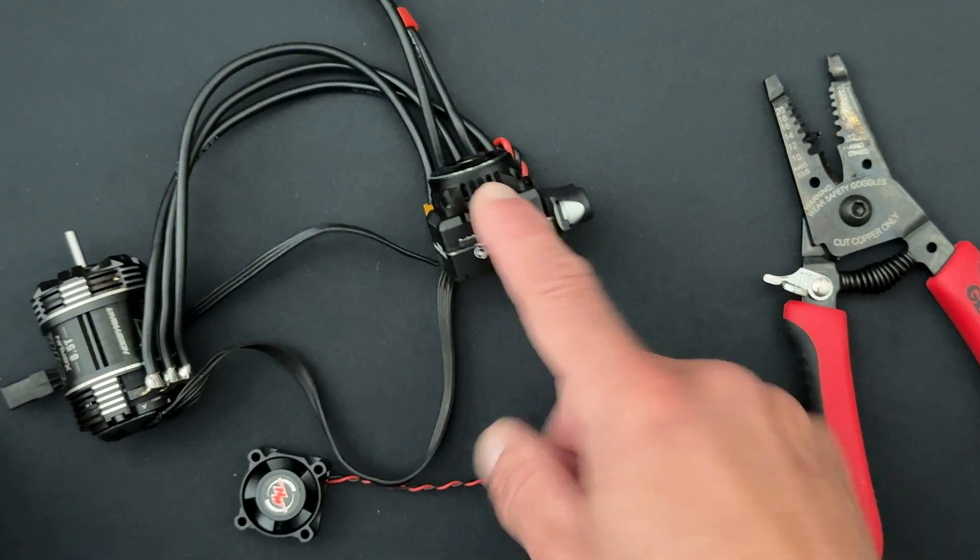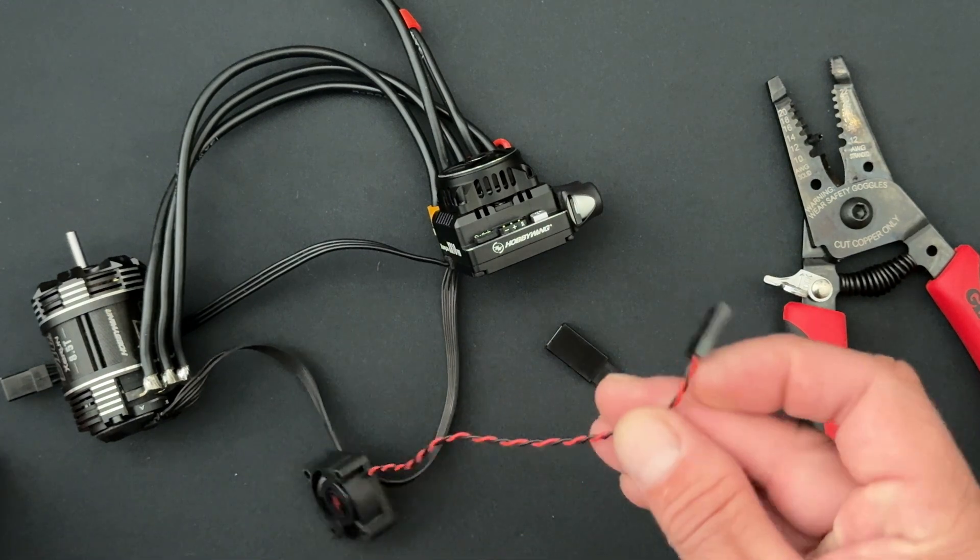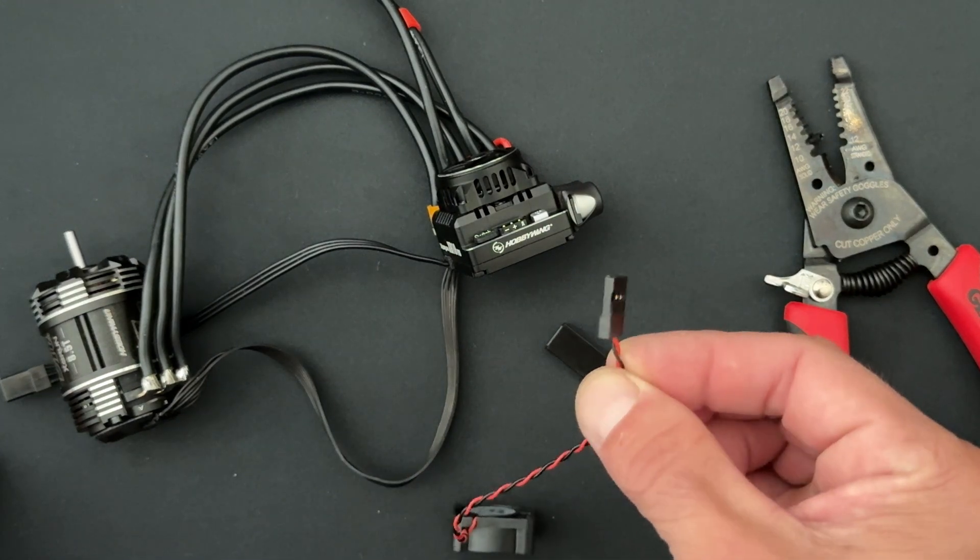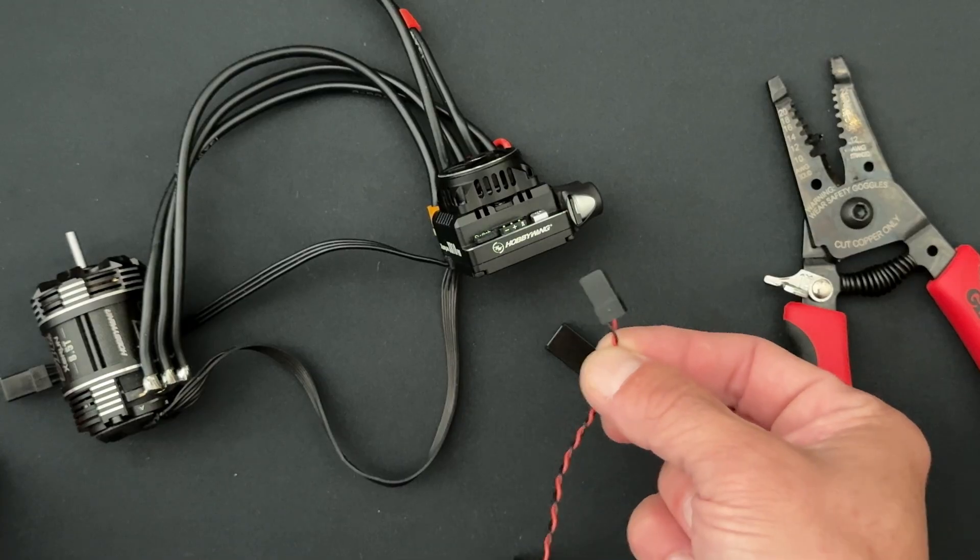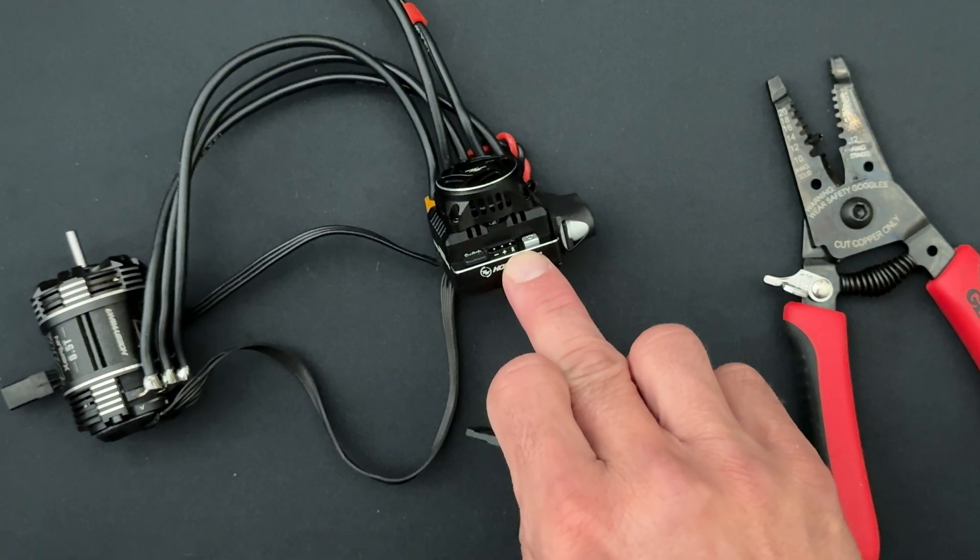The speed control fan is great, but an extra one on the motor does a lot. And a lot of times folks just, because it's got a receiver plug in it, they'll either plug it into the receiver port, an extra slot on your receiver, or they'll actually use the programming port on the speed control.